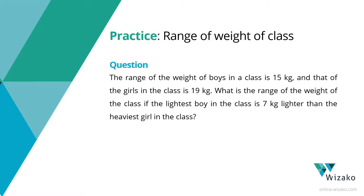The range of weight of boys in a class is 15 kg — meaning the heaviest boy minus the lightest boy equals 15 kg. The range of weight of the girls in the class is 19 kg. What we need to compute is the range of weight of the entire class — the heaviest person minus the lightest person, boys and girls taken together. Additionally, the lightest boy in the class is 7 kg lighter than the heaviest girl.